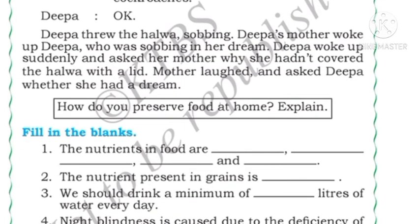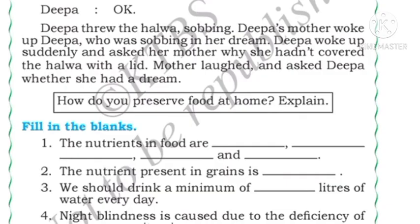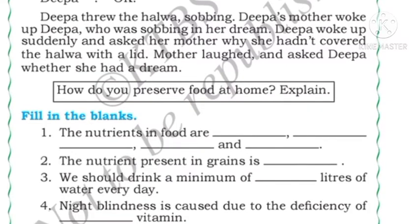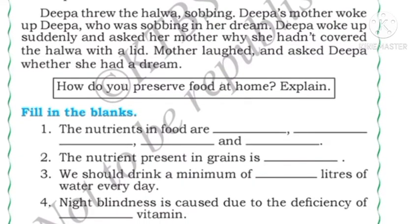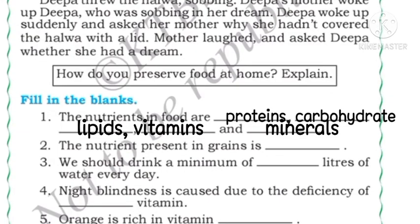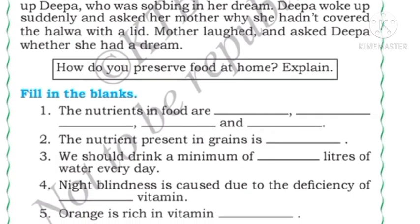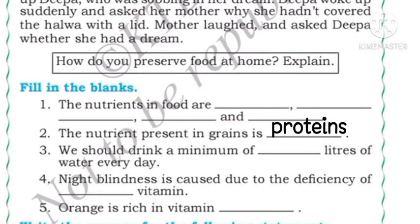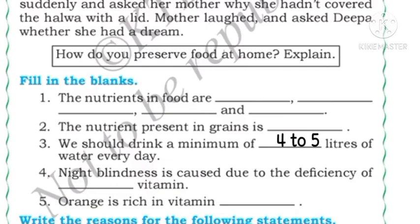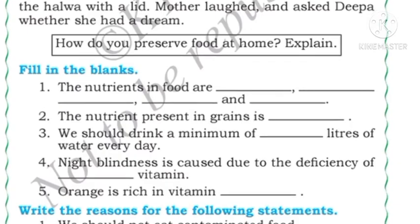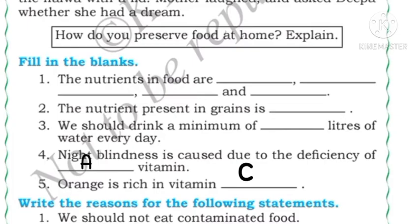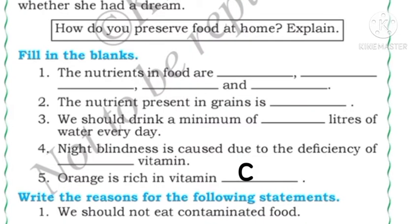How do you preserve food at home? We preserve food by covering it and not eating open food. Now for the fill in the blanks: the nutrients present in food are proteins, carbohydrates, lipids, salt, vitamins, and mineral salts. The nutrients present in grains are proteins. We should drink a minimum of four to five liters of water every day. Night blindness is caused due to the deficiency of Vitamin A. Orange is rich in Vitamin C.